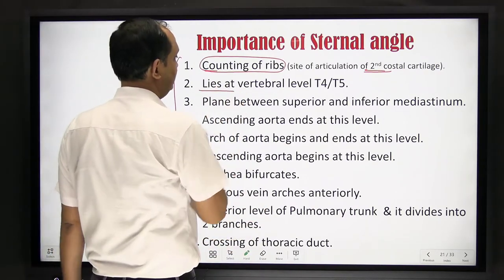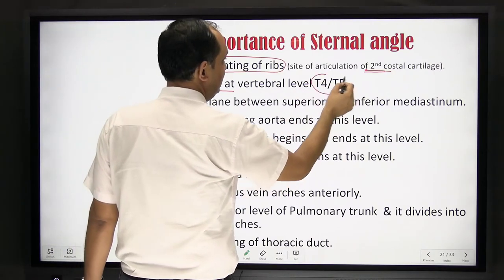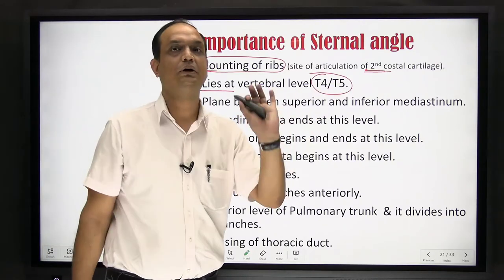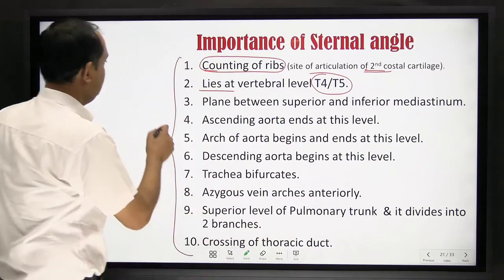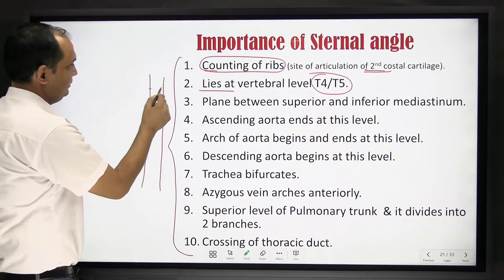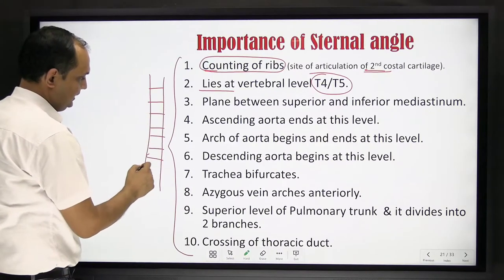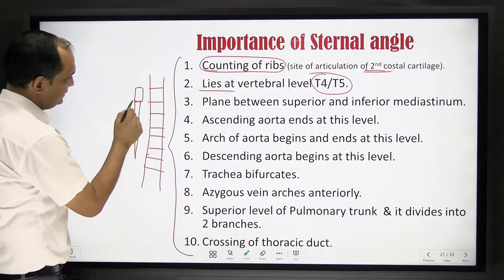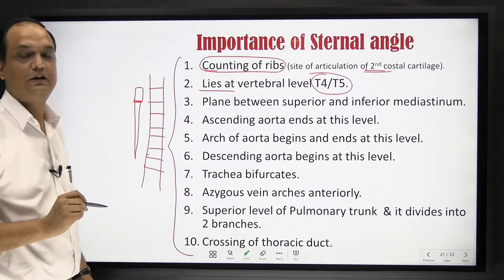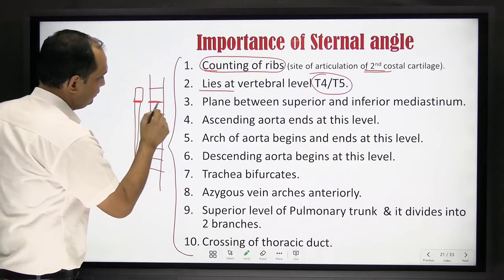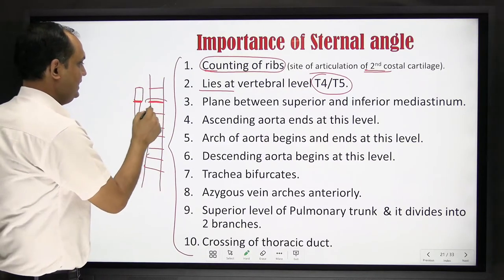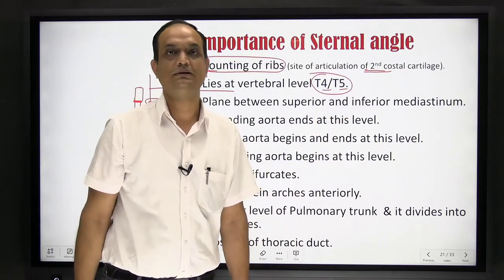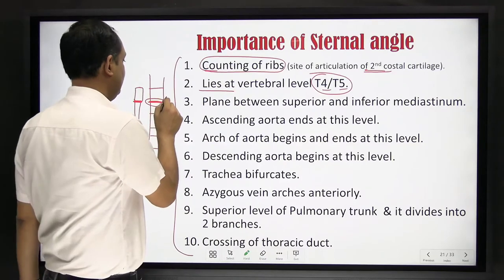The second importance is that at the level of the external angle, if you talk about the vertebral level, we find the intervertebral disc between the fourth and fifth thoracic vertebra. So if you look at the vertebral column posteriorly with the thoracic vertebrae, and place the sternum parallel to it, this junction — known as the angle of Louis — corresponds to the junction of the fourth and fifth thoracic vertebra, that is the intervertebral disc of T4 and T5.